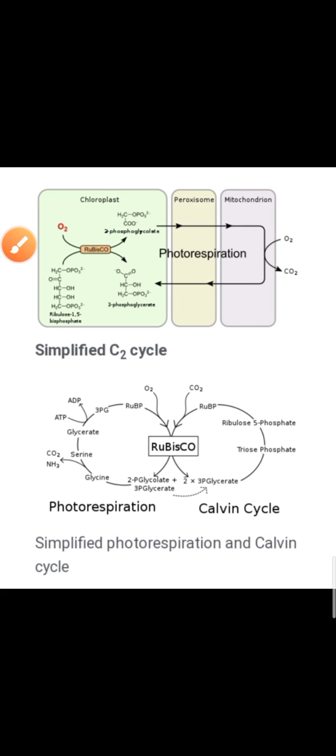Good morning students. Today we will discuss photorespiration, which is known as the C2 cycle. Please correct one thing: C3 plants are normal green plants, and C4 plants are those that show Kranz anatomy, like maize. CAM plants belong to the Crassulaceae family — the CAM mechanism was first found there, which is why they are known as Crassulacean plants. The C2 cycle is known as photorespiration.